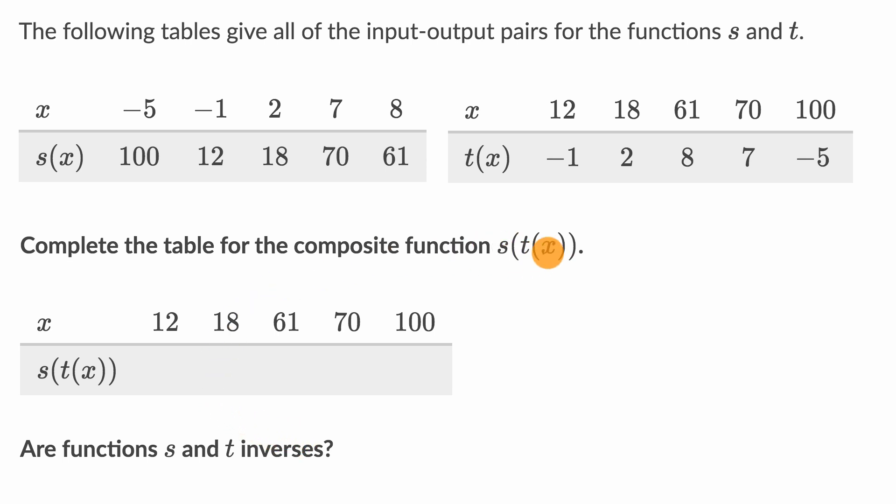Let's remind ourselves what's going on with a composite function like this. You're going to take some x value, and it looks like we're first going to put it into the function t. That is going to output t of x. And then we're going to take that output, take that t of x, and then it will be the input into s. So then we're going to input that into s, and then that would output s of what we inputted, which in this case is t of x.